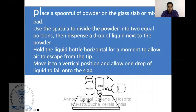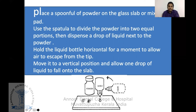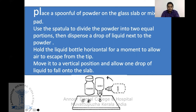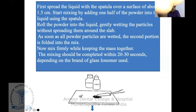As a general rule, place a small spoonful of powder on the glass slab. Use the spatula to divide the powder into two equal portions, then dispense a drop of liquid next to the powder. Hold the liquid bottle horizontal to allow air to escape, then move to a vertical position and allow one drop of liquid to fall onto the slab. Spread the liquid with the spatula over a surface of about 1.5 centimeters.